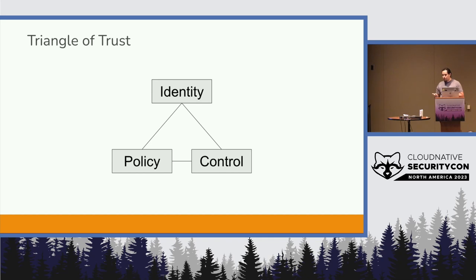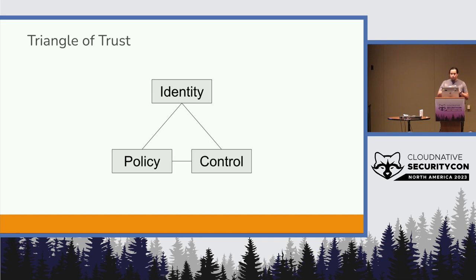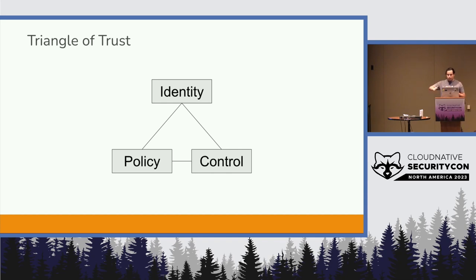We already have this with users. Every application used to have its own identity. Eventually we got single sign-on so all identities could be managed from a single location. Then we got federation of those identities so you can have a single identity managing your external third-party services — so if you have to shut down an account, change a password, or add two-factor authentication, it works across all your services. We want to do the same thing with workload identities, with cryptographic identities that are continuously redeployed and reissued, and federated across multiple systems.